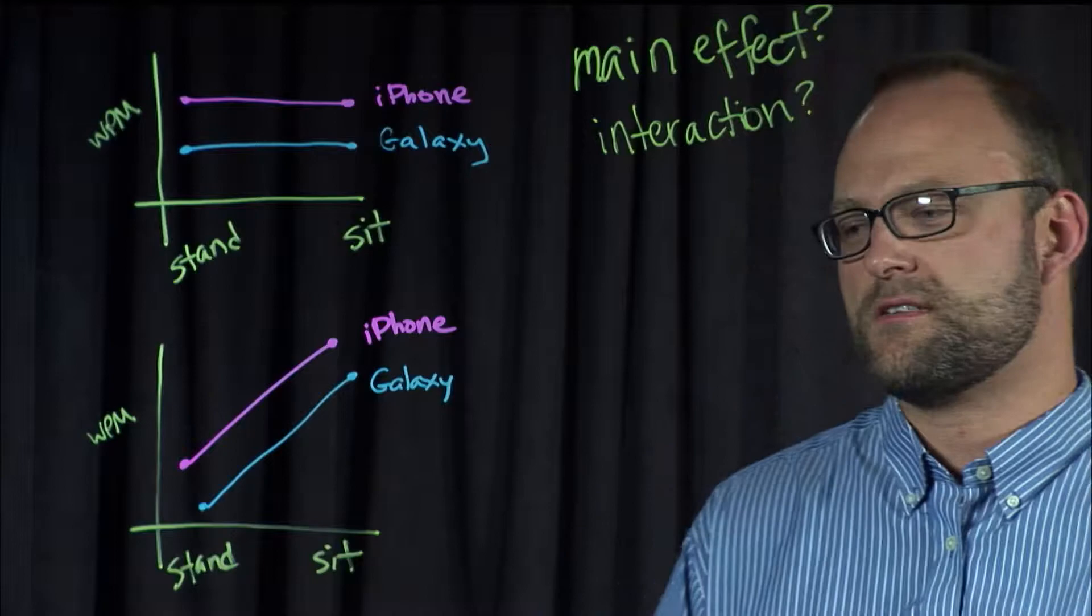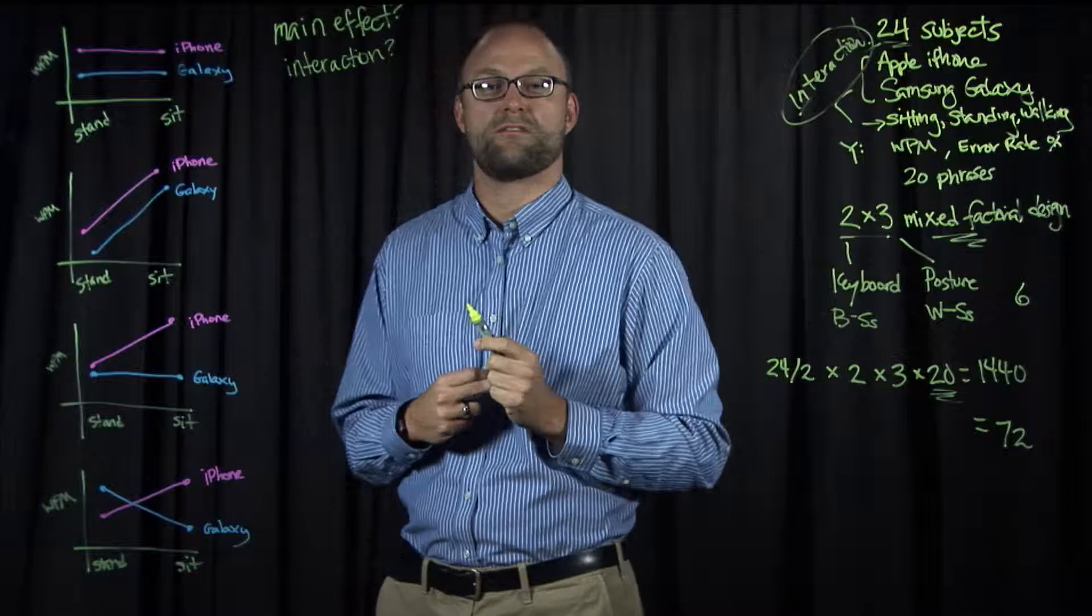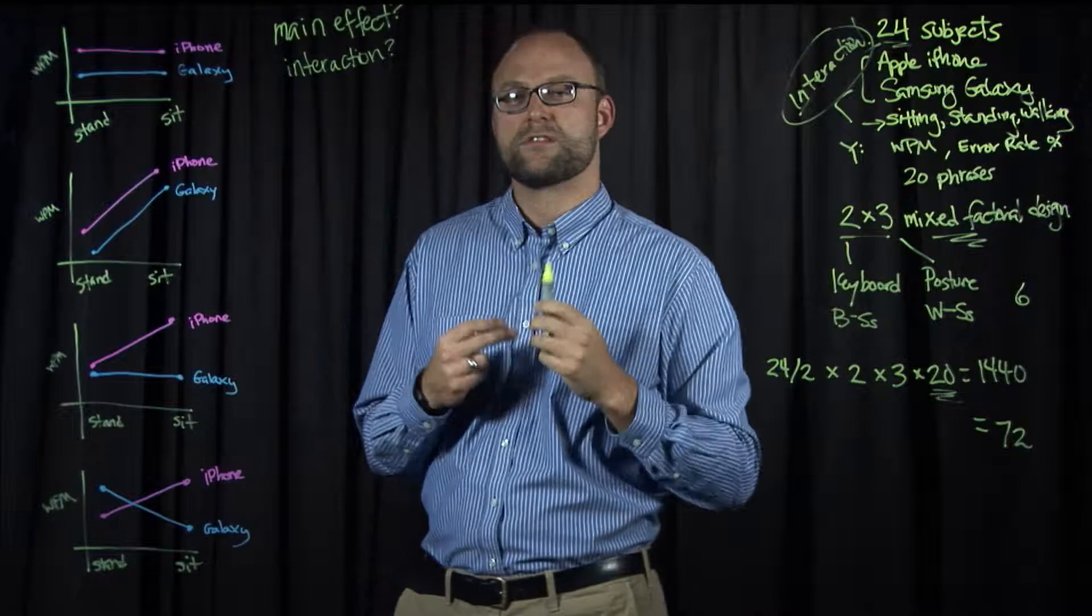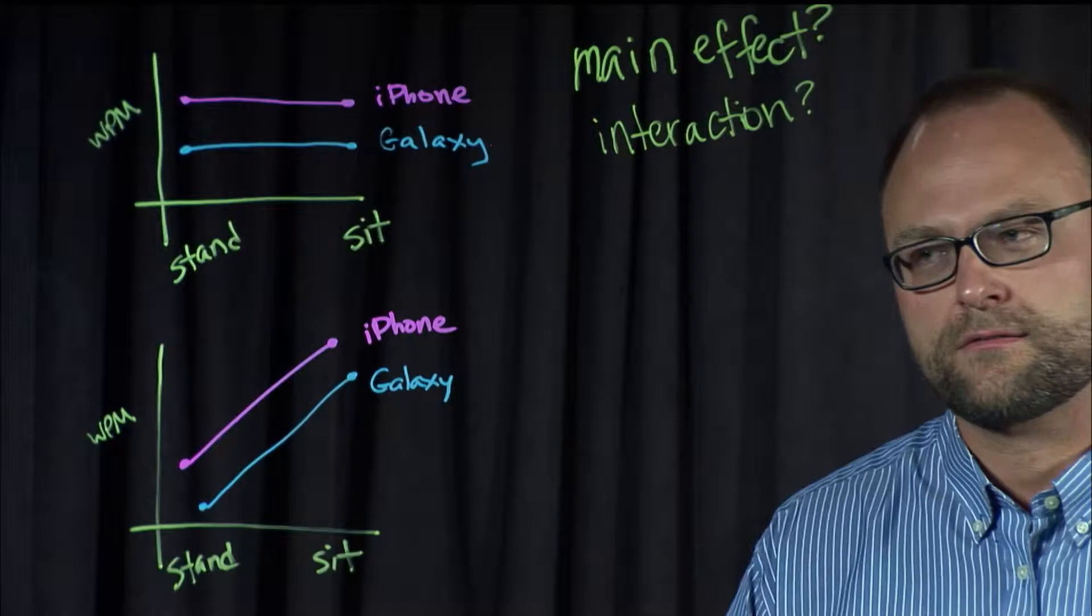Well from standing to sitting now, we see that there's a change. It seems that when people are sitting, they're faster with both keyboards. So yes, we'd say there's a main effect of posture. And then we'd ask, is there an interaction? And here we see parallel lines. We see that from standing to sitting, while things improve in terms of speed, they improve the same for each keyboard. So there's not an interaction.